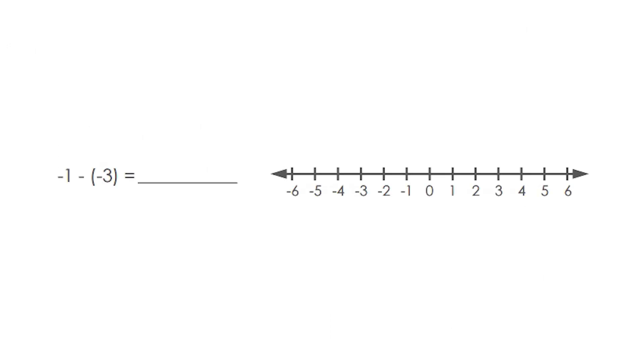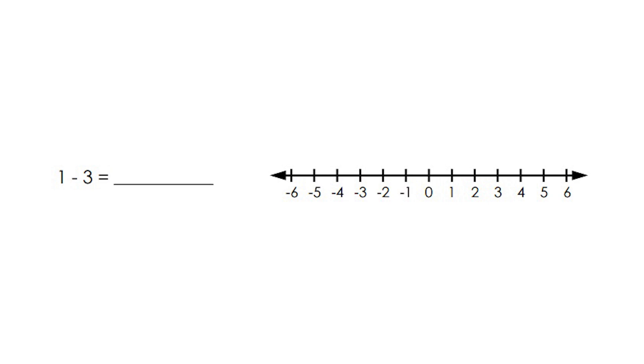Let's see how much you have understood. Are you up for the challenge? First question: what is negative 1 minus negative 3? The answer is 2. Here's another one: what is 1 minus 3? The answer is negative 2. Good job!